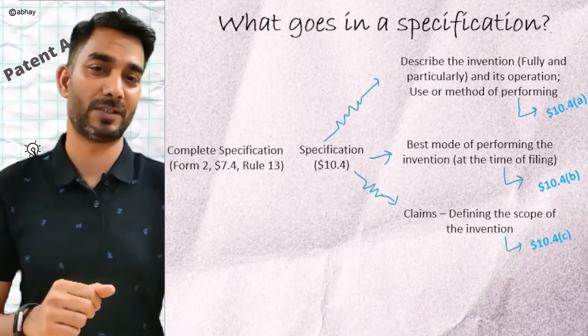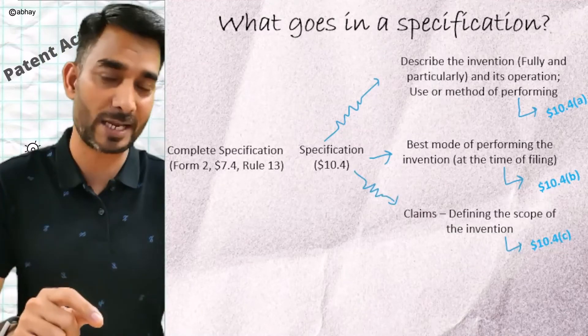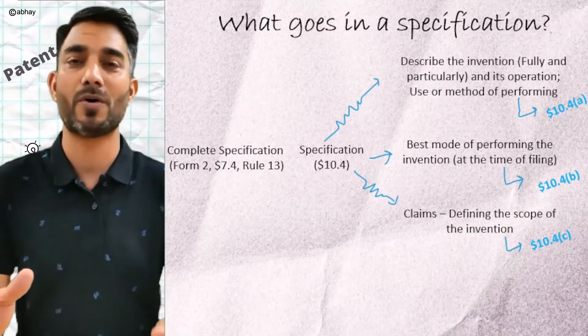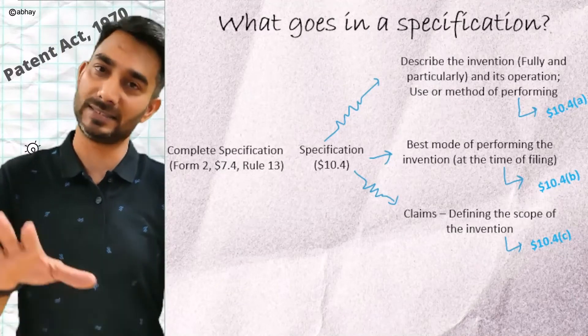Then there is a requirement of claims. A specification should include claims which clearly define the scope of the protection that the applicant is seeking.